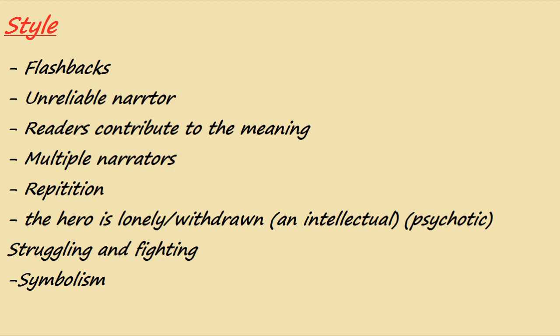We also have the unreliable narrator. Sometimes the narrator has a problem with a character, so you cannot trust the narrator because he has a distorted opinion about an event and might change it. This leads to another point: readers contribute to the meaning of the story — when you know you cannot trust the narrator, you have to deduce the meaning yourself. This also leads to multiple narrators, giving the reader different points of view. There is also repetition — many things are repeated throughout the overall story.